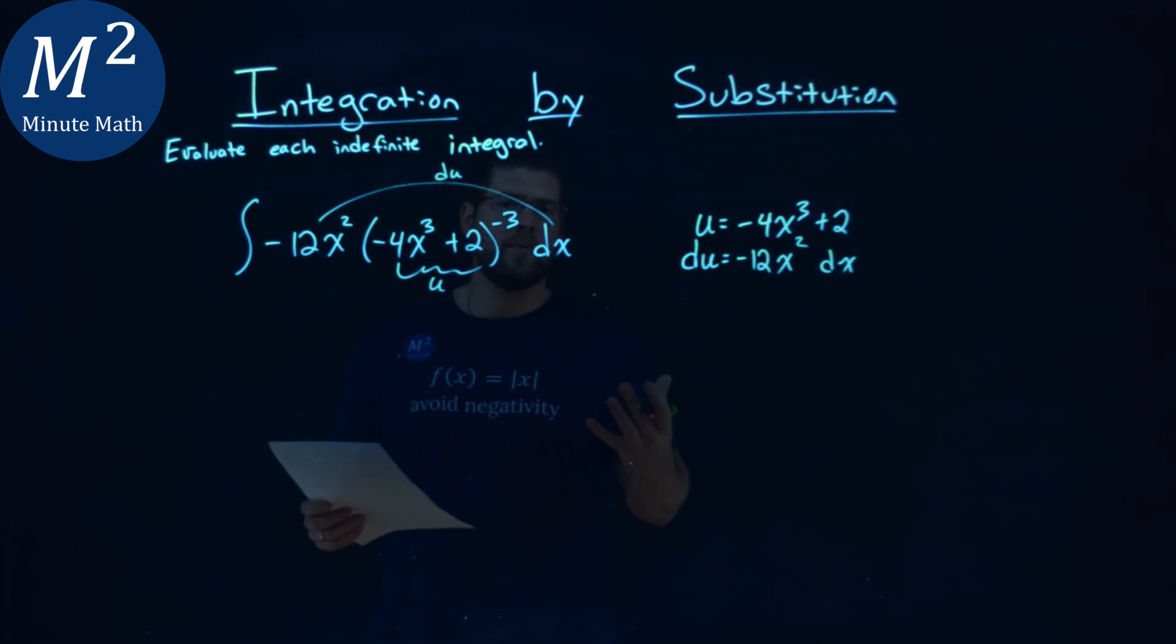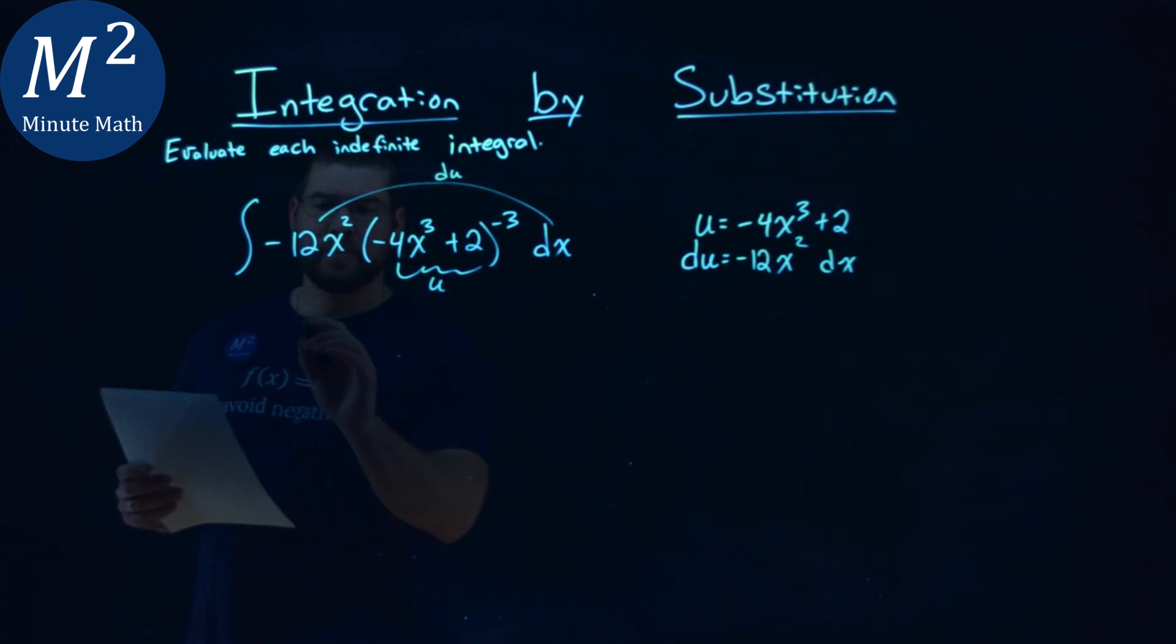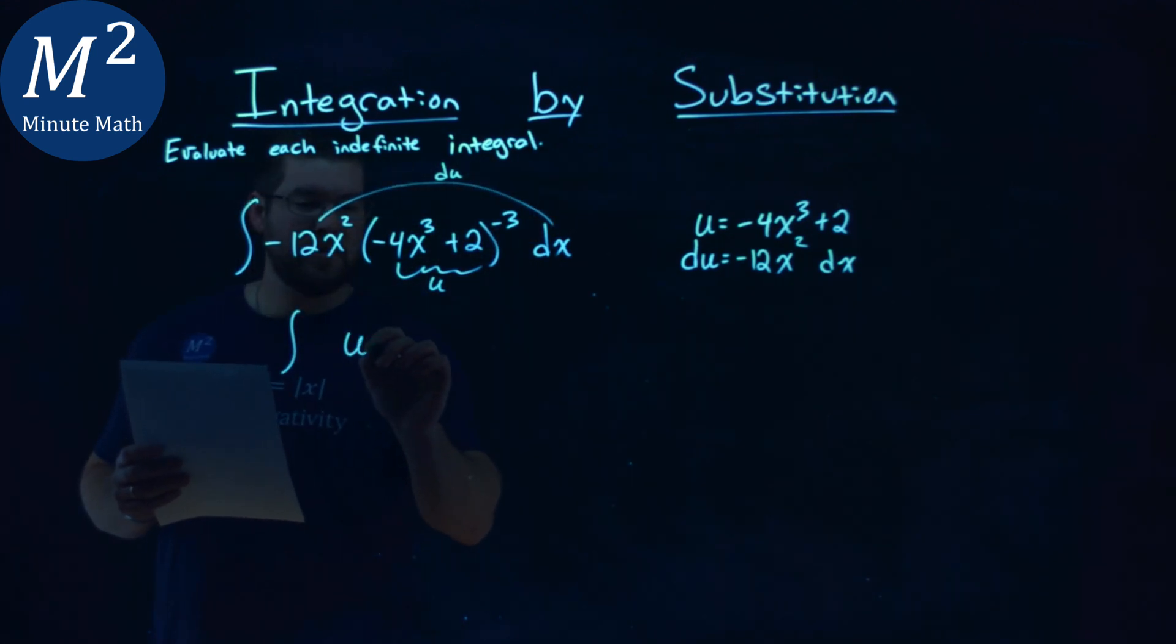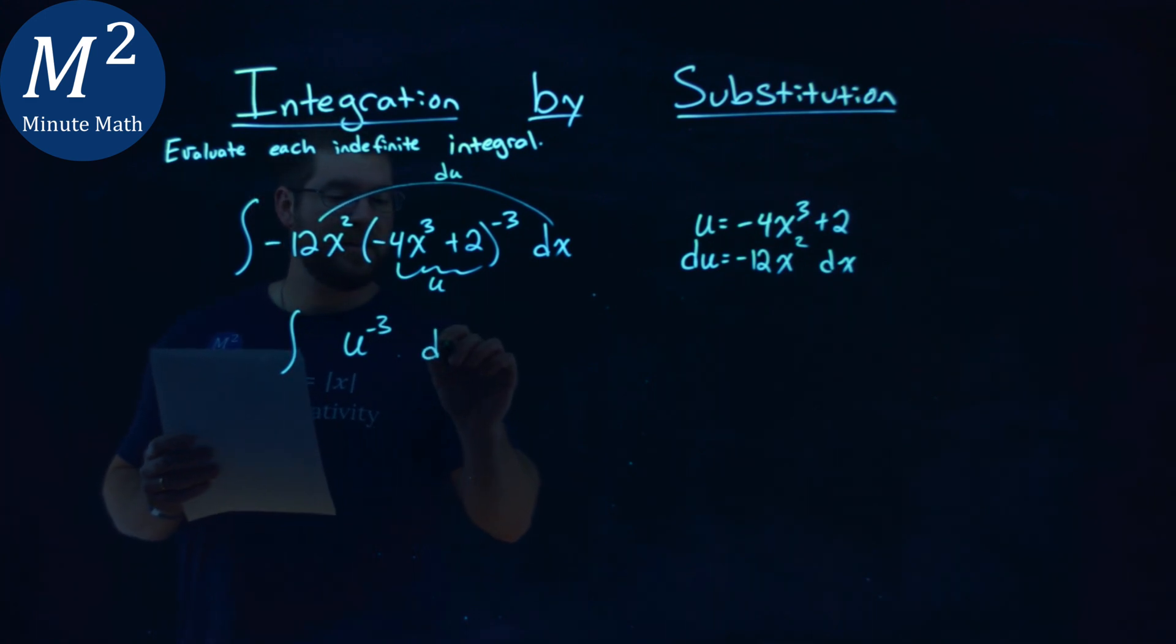So let's rewrite this in terms of u. The integral here is just u to the negative third power du.